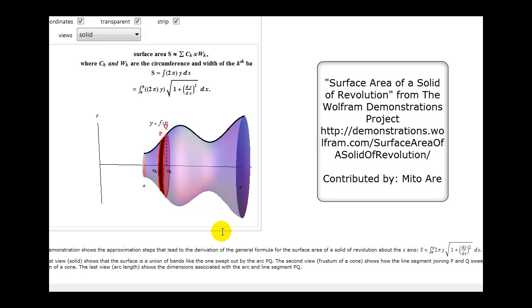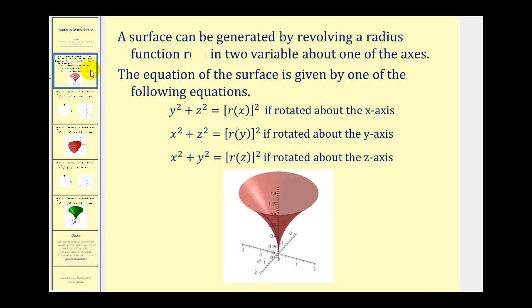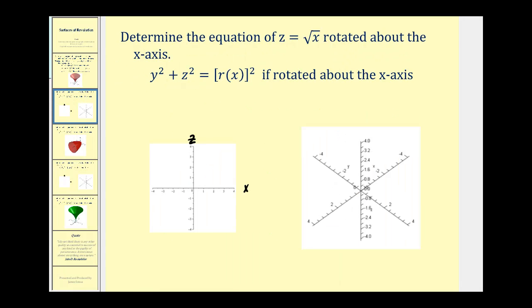Let's take a look at an example. Here we want to determine the equation of z = √x rotated about the x-axis. Since we know it's rotated about the x-axis, we're going to be dealing with the equation y² + z² = r(x)². Let's first graph this function in the xz-plane.